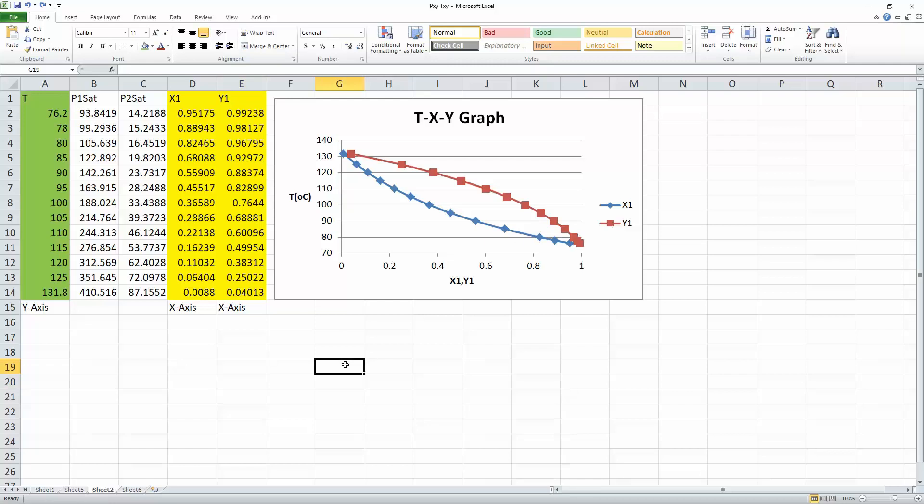So this is the diagram. And a couple important features in it is that let's say the x value is 0.4. This value would correspond to this number and this number. And so that is a main feature in a TXY diagram.